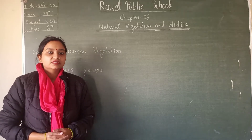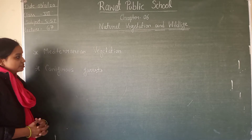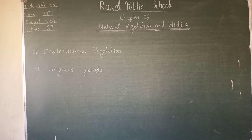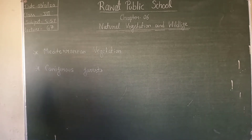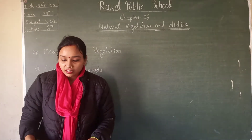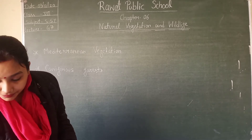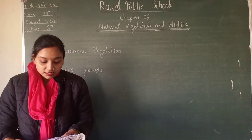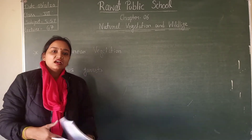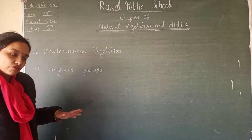Good morning, class 7. Students, we are on chapter number 6, Natural Vegetation and Wildlife, and we have done 4 types of forest. The first is tropical evergreen forest, the second is temperate deciduous forest, the third is temperate evergreen forest, and the fourth is temperate deciduous forest. In this class we will cover Mediterranean vegetation and coniferous forest.